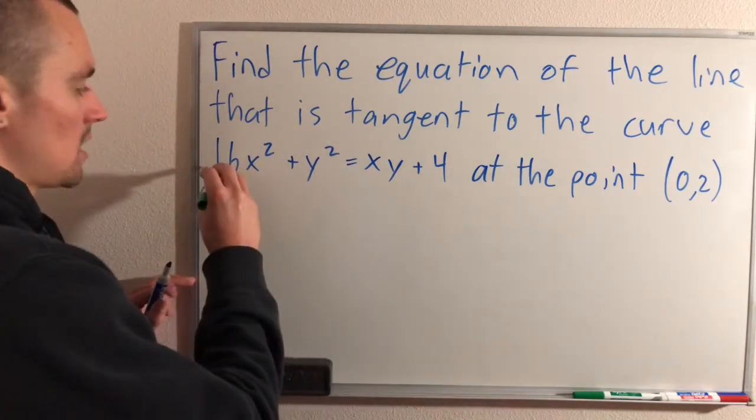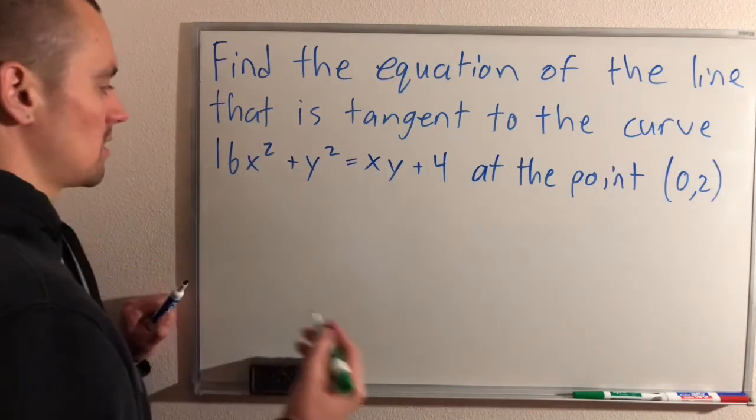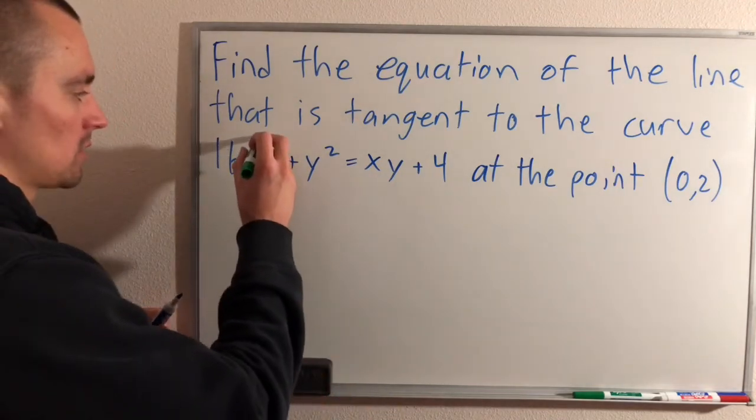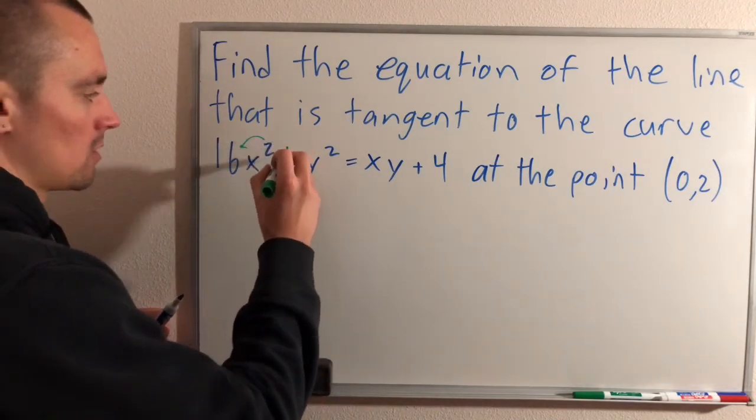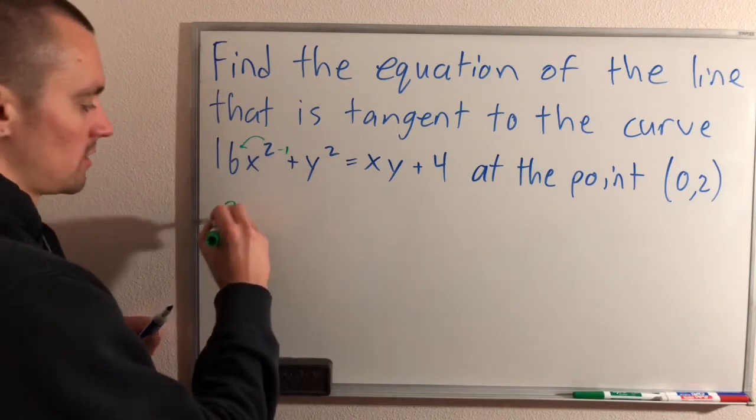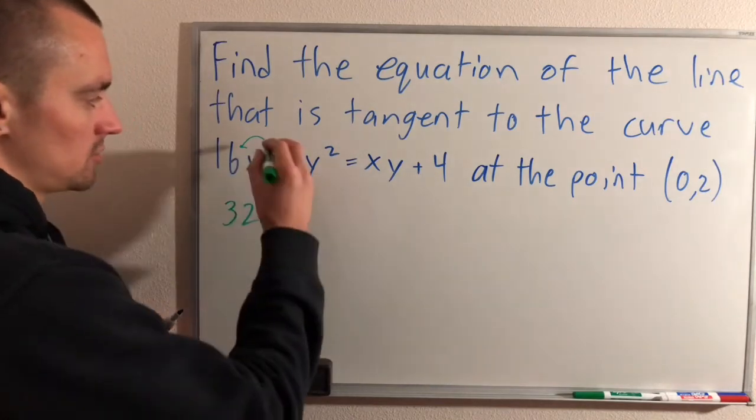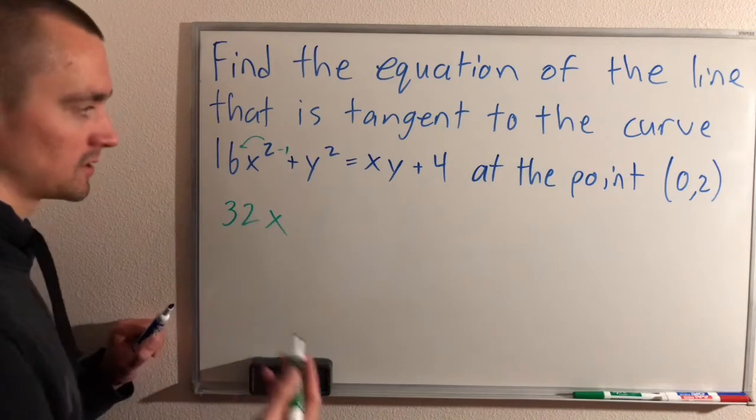So doing that, the derivative of 16x² is just going to be power rule, right? Bring the power down in front, lower the power by 1. That's going to give us 32x. 2 minus 1 is 1, x to the 1 is just x.